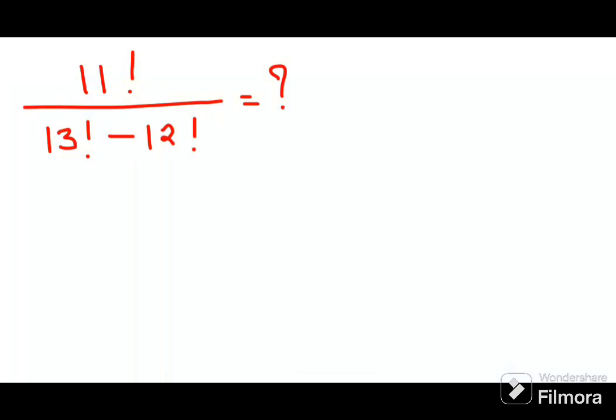Welcome everyone. So today we are going to solve a very nice Olympiad question. The question is 11 factorial divided by 13 factorial minus 12 factorial.